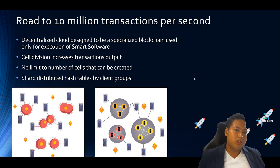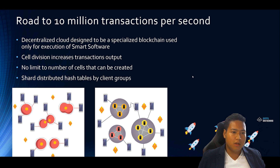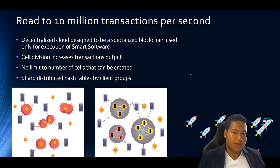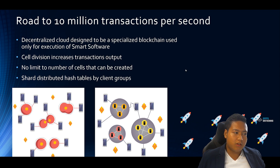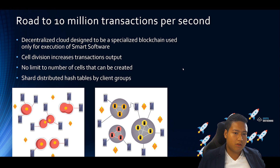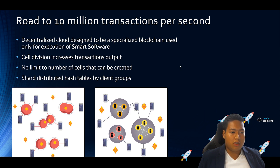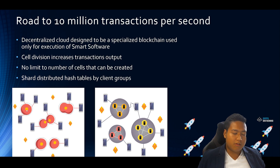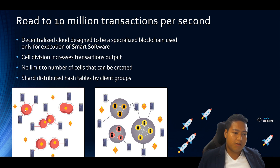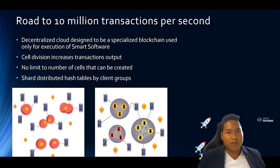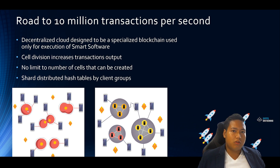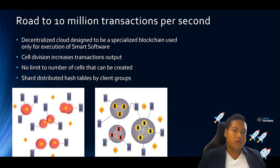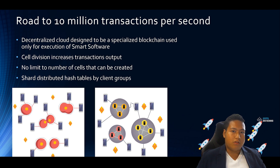So how are they going to achieve 10 million transactions per second? The decentralized cloud is designed to be a specialized blockchain used only for the execution of their smart software, and they utilize cell division to increase transaction output. Say if one cell grows big enough, it is able to divide itself into two separate cells, and that will double their transaction speed. As each cell grows, it will continue dividing and increasing. Theoretically, there's no limit to the number of cells that can be created.